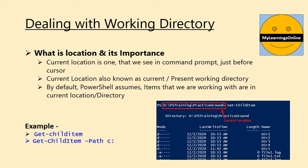In this example, we have two commands. In the first command, we have not specified any particular location, so this command will list the contents of the current directory — that is the one marked in red in the screenshot. In the second command, we have specified a path particularly, so it will list contents from that specified path only. PowerShell has many commands to deal with location. We will be seeing these commands in the coming slides.